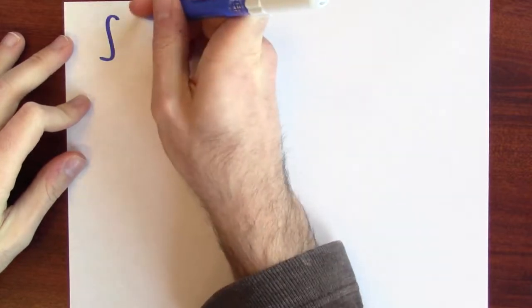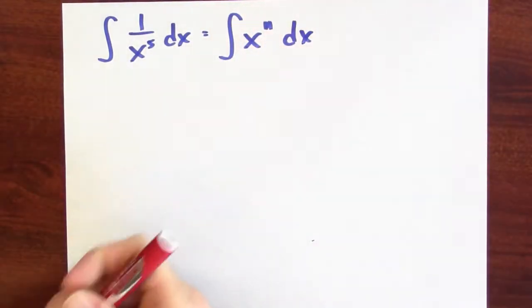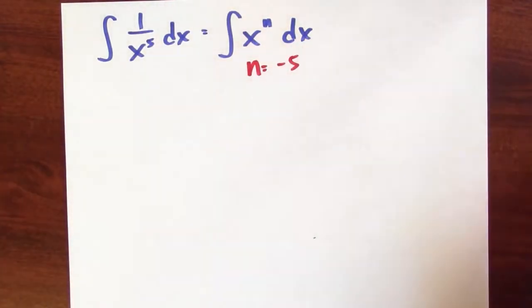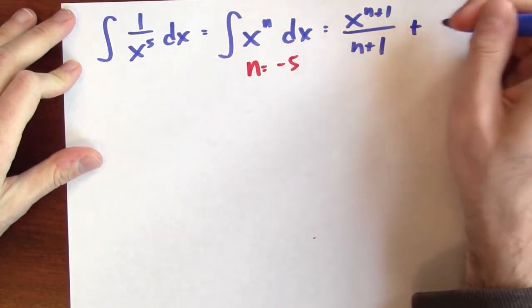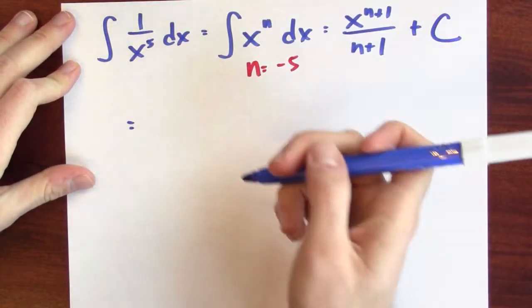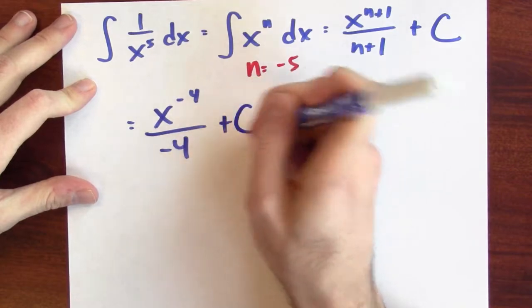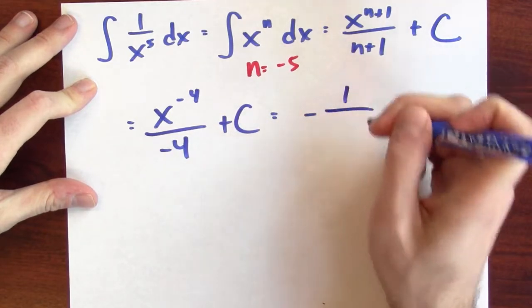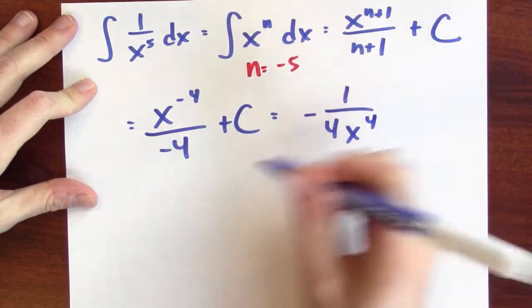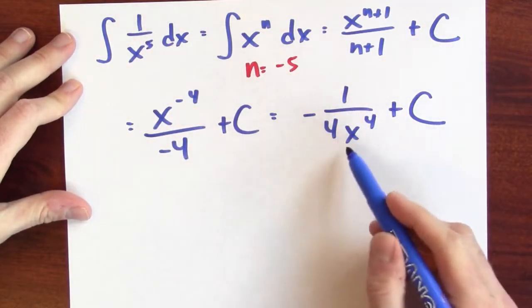I should point out something here — a potentially subtle issue. Suppose I want to anti-differentiate 1 over x to the fifth. I can write this as anti-differentiating x to the n where n is negative 5. The power rule tells me the anti-derivative is x to the n plus 1 over n plus 1 plus c. With n equal to negative 5, that's x to the negative 4 over negative 4 plus c, which I can write as negative 1 over 4x to the fourth plus c. So an anti-derivative of 1 over x to the fifth is negative 1 over 4x to the fourth.